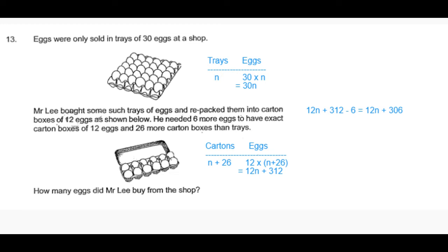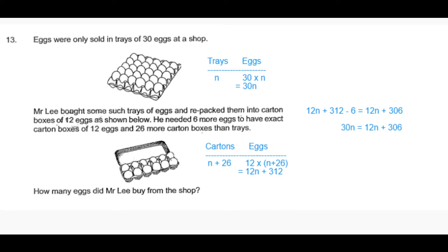Now the total number of eggs that he bought in the tray, we know it to be equal to 30n, should be equal to the number of eggs he has now fit into the carton boxes, which is 12n plus 306.